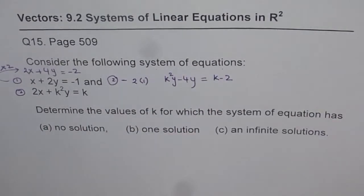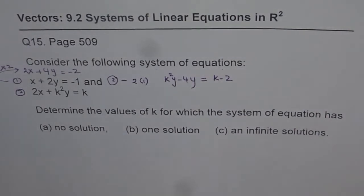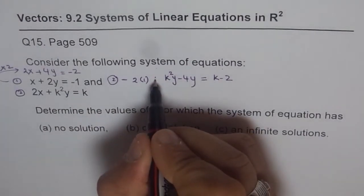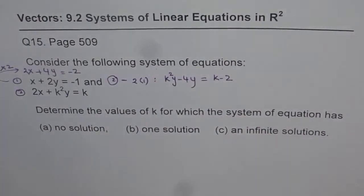We get k square y minus 4y on the left side equals to k minus 2 on the right side. So that is what you get once you do equation 2 minus 2 times equation 1, correct?